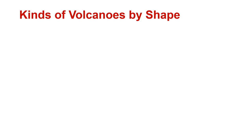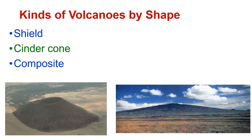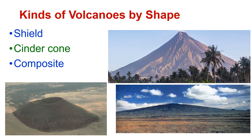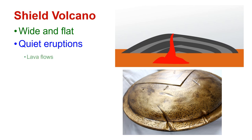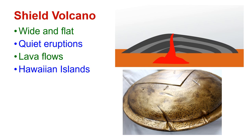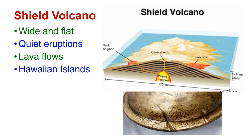There are three kinds of volcanoes when we describe them by shape: a shield volcano, a cinder cone volcano, and a composite volcano. Shield volcanoes are very low — they look like a shield down on the ground, wide and flat. Their eruptions are quiet and mainly they just flow lava. This is how the Hawaiian islands were created. Here's another diagram showing how the magma comes up and the lava flows out to create more land.